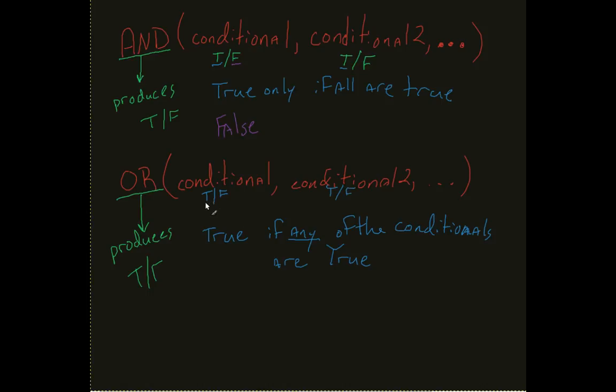If, for example, this was true and this was false, the OR is still going to produce a true because only one of them needs to be true. If they are all false, then it will be false.